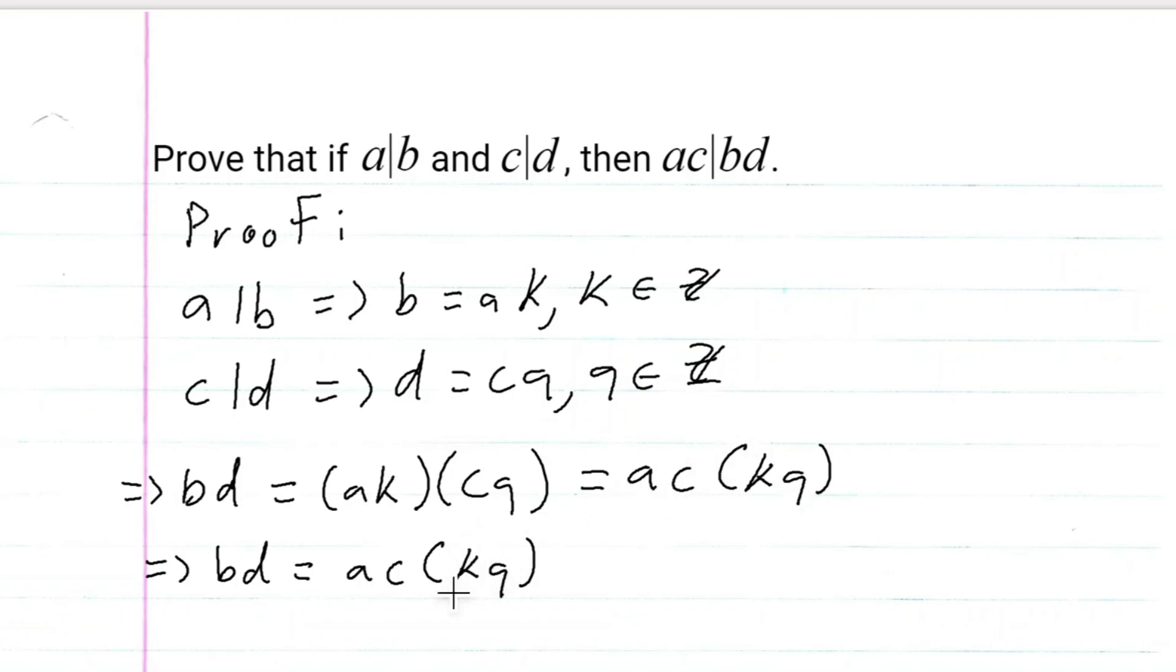And since K is an integer and Q is an integer, that means the product here is an integer. And this is the definition of divides. AC times an integer is equal to BD. This implies that AC divides BD, and we are done.